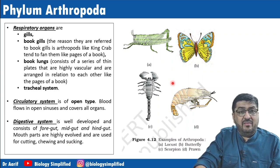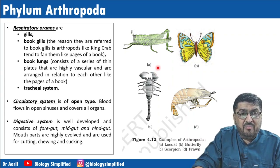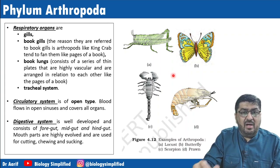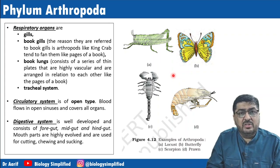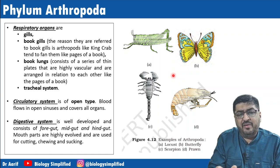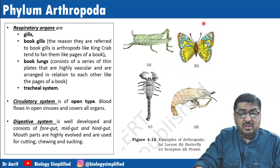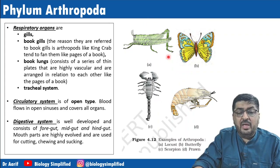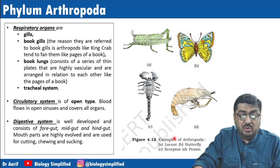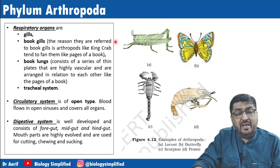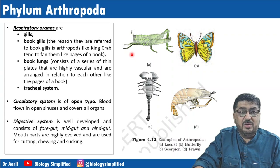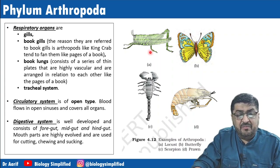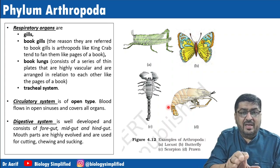Regarding the NCERT image shown here — I want to draw your attention to the green-colored structure. I have observed that students often identify it as a grasshopper, but please note it is a locust. I have given this diagram many times and the majority wrote 'grasshopper' — please be clear, it is a locust.